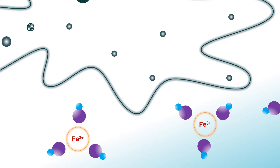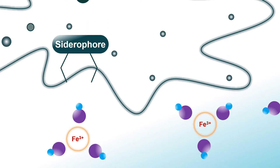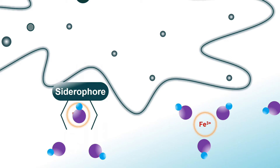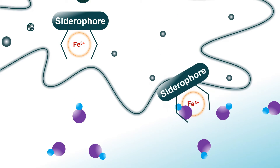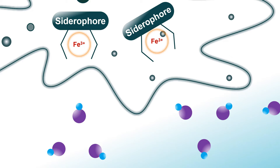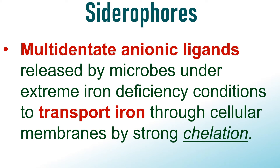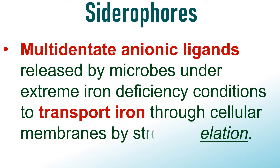To overcome this situation, the microbes secrete specialized molecules known as Siderophores. They bind the ferric ions through complex formation and transport them into the cells through the specific receptors of cell membranes. The Siderophores are multi-dentate anionic ligands that help in the transport of iron under extreme iron deficiency conditions.